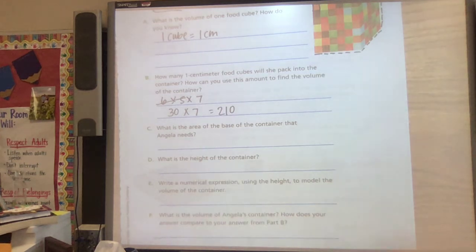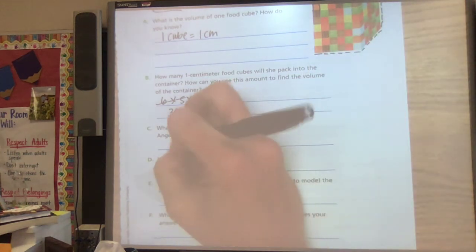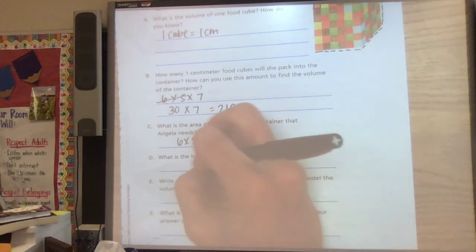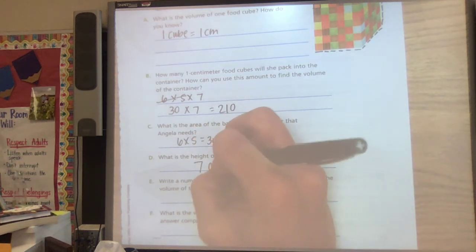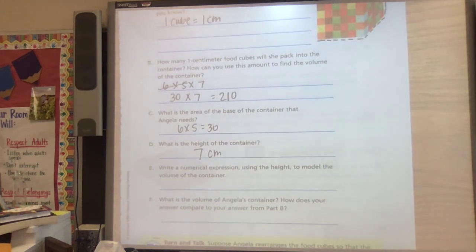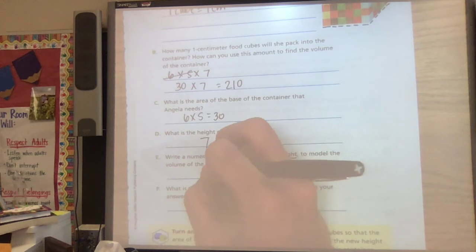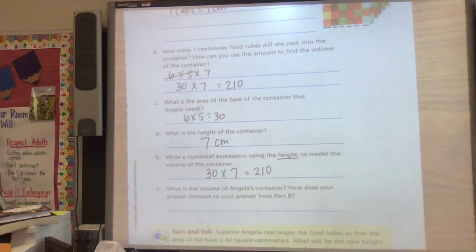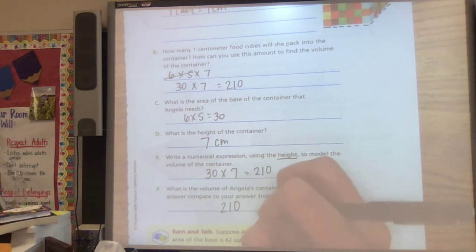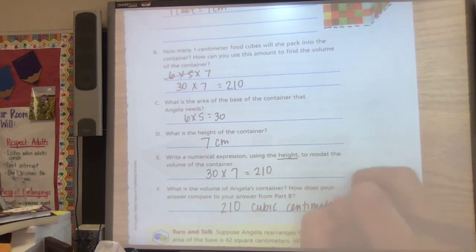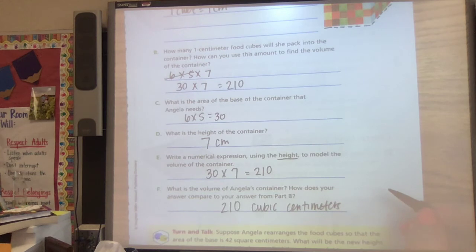What's the area of the base? That would be your 6 times your 5, so that is 30. What is the height of the container? It's seven centimeters because it's seven of those units high. Write an expression using the height to model the volume. So if we're just using the height, we know the base is 30 and the height is 7, so the volume is 210 cubic centimeters. And it says how is it the same as B? They are the same number.